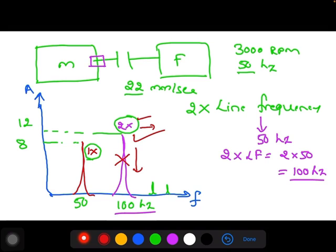Since 2x is higher, you may suspect misalignment. Then you need to do phase analysis. You need to take the cross phase across the coupling, but the accelerometer should be in the same direction across the coupling. If you are getting around 180 degrees plus or minus 30, then it clearly indicates it is a misalignment condition.